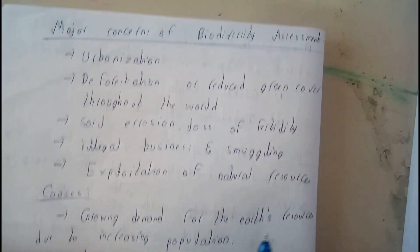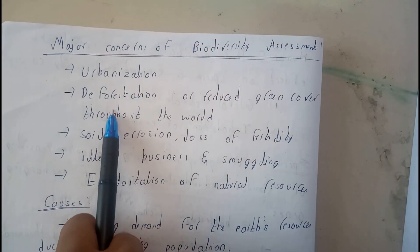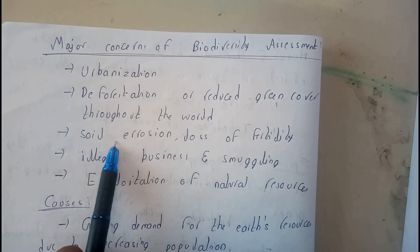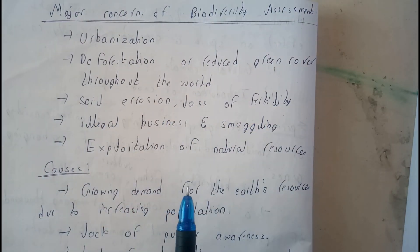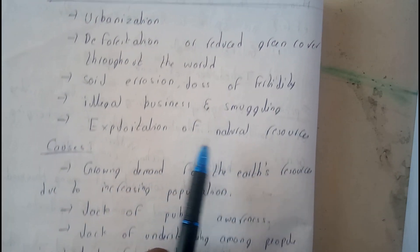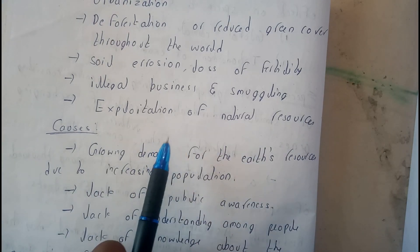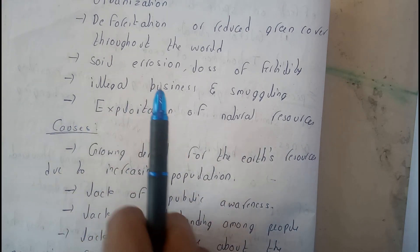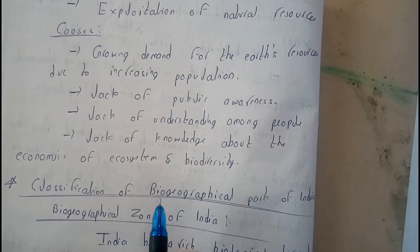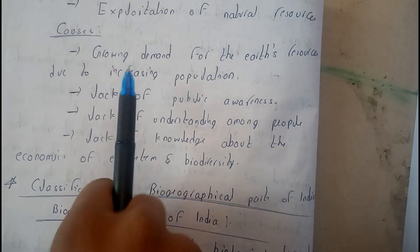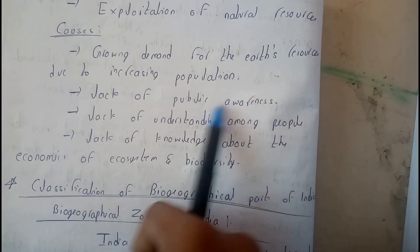The major causes for biodiversity loss include urbanization, deforestation — which means reducing green cover throughout the world — soil erosion, which is the loss of soil fertility, illegal business like smuggling of products, exploitation of natural resources meaning over-usage, and the growing demand for the earth's resources due to a rise in population.